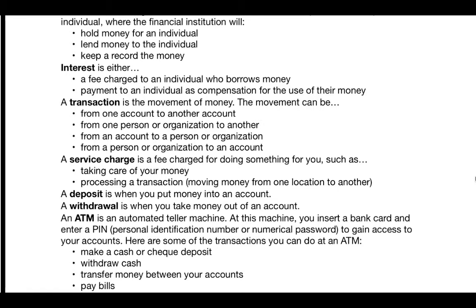ATMs have changed over time. Now the machines can read the money you're putting in and tell exactly what you've inserted. They can also scan checks and know exactly how much they're for, so they've become a lot more intelligent. You can also withdraw cash, transfer money between your accounts, and pay bills — either in person with a bank teller, online, or at an ATM in various locations including convenience stores.